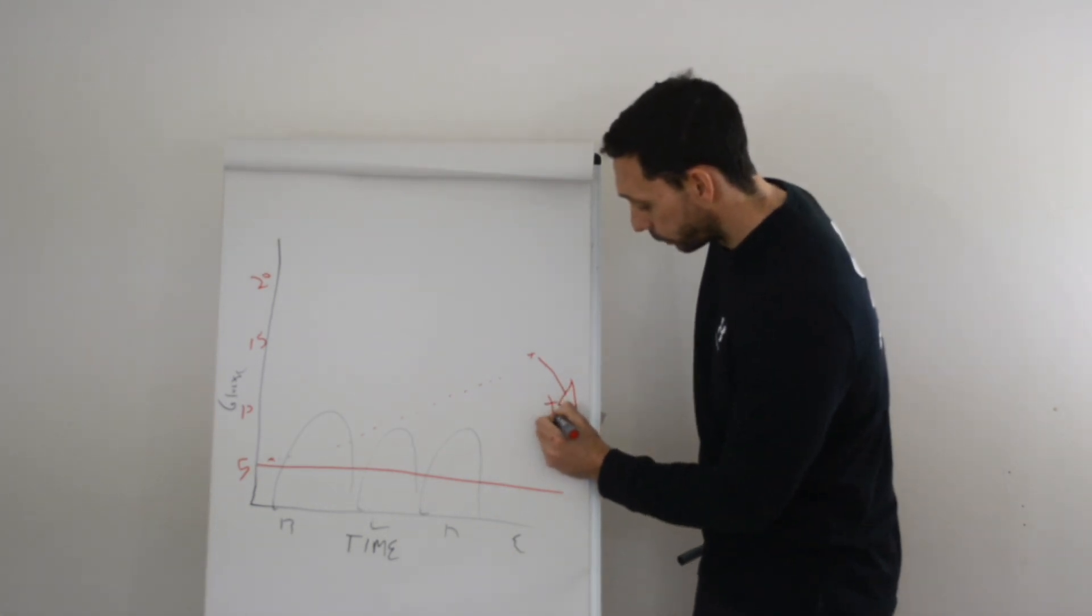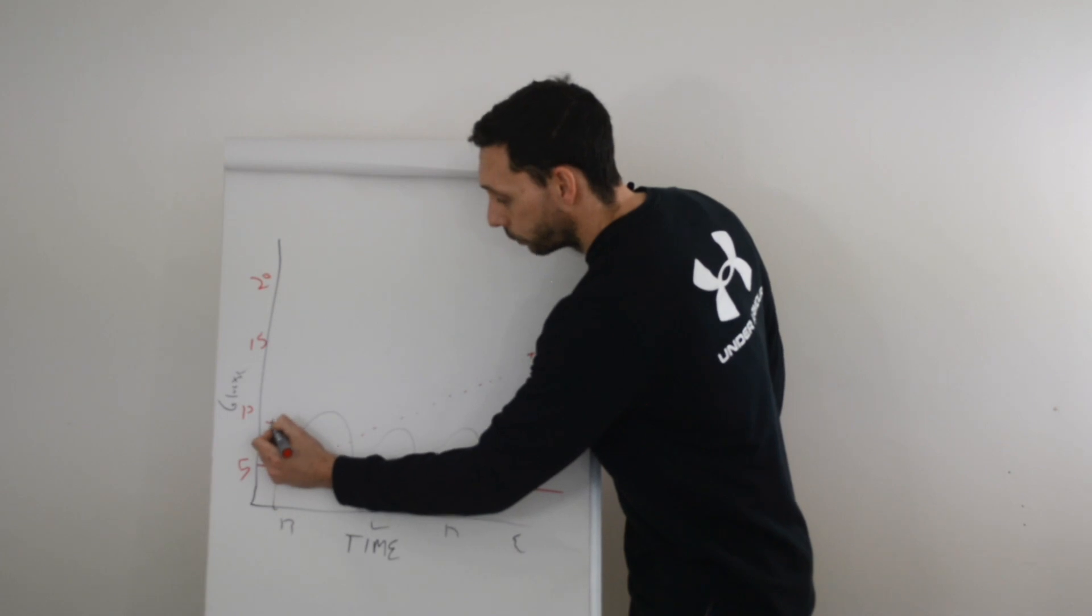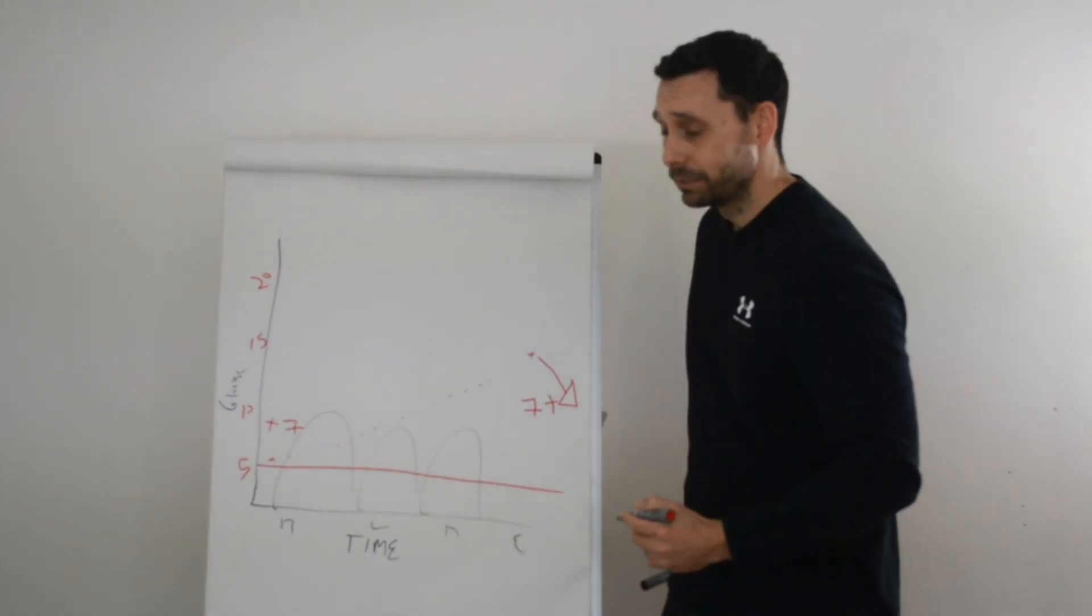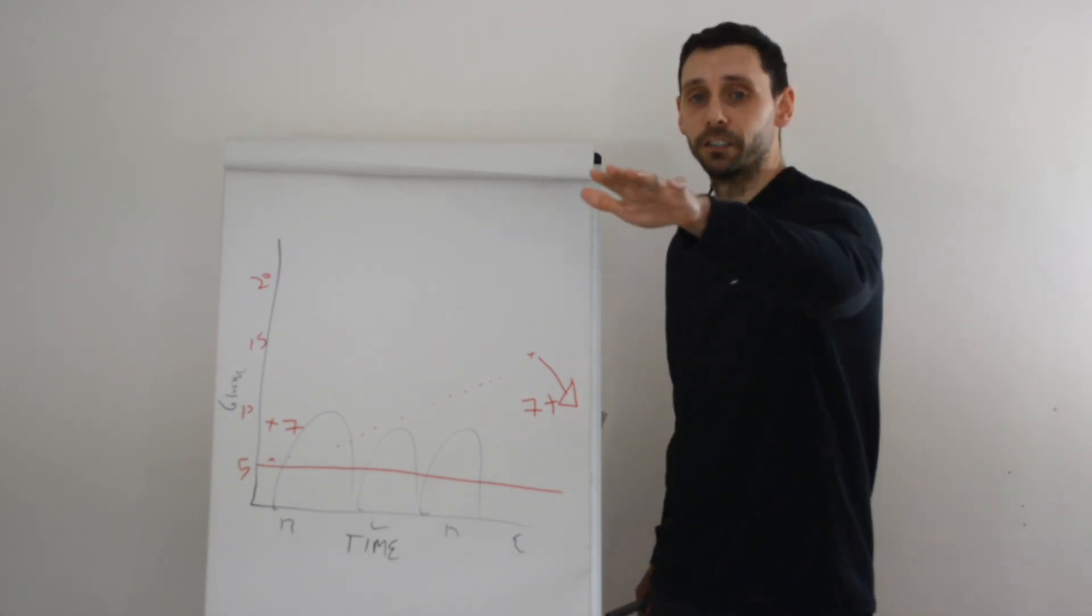Can you go to bed with a glucose level of seven and wake up with a glucose level about the same? Six, seven, eight. That shows us your basal insulin is keeping your glucose levels steady.